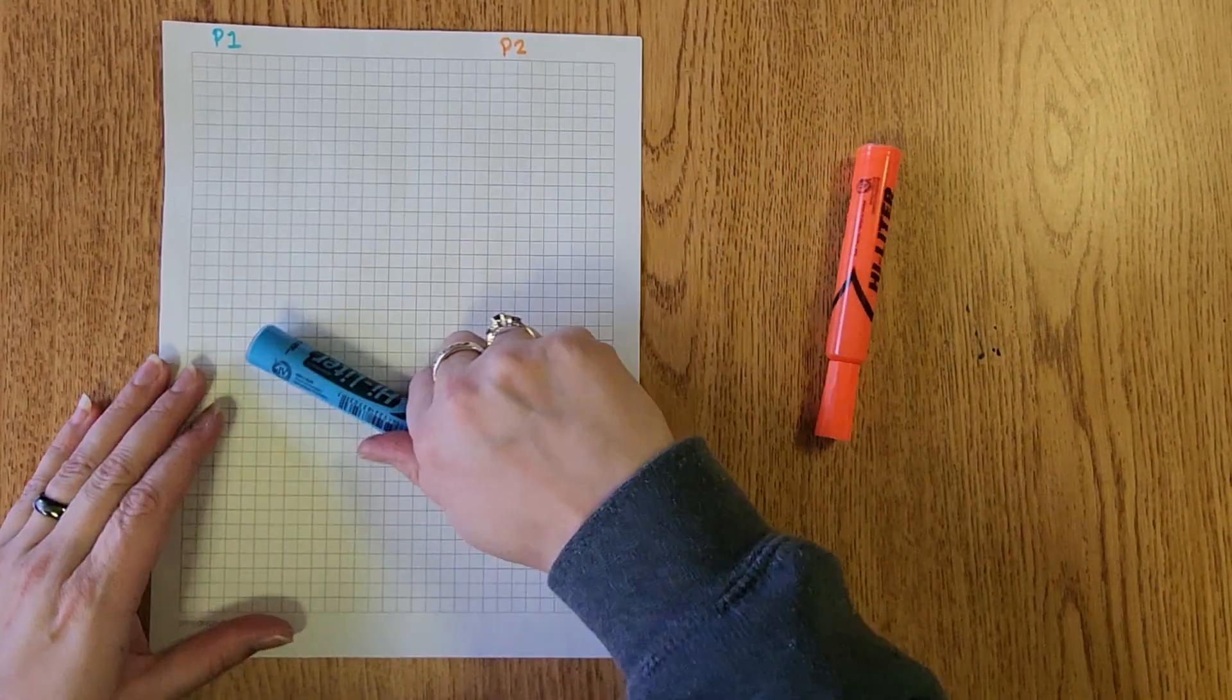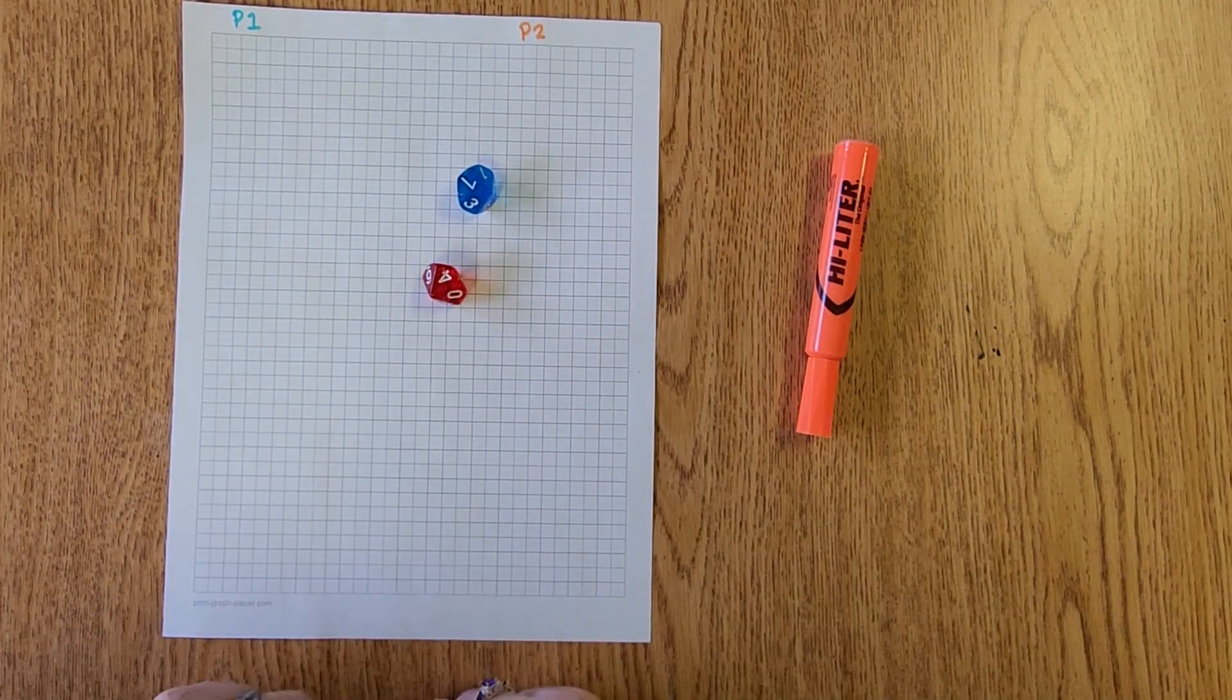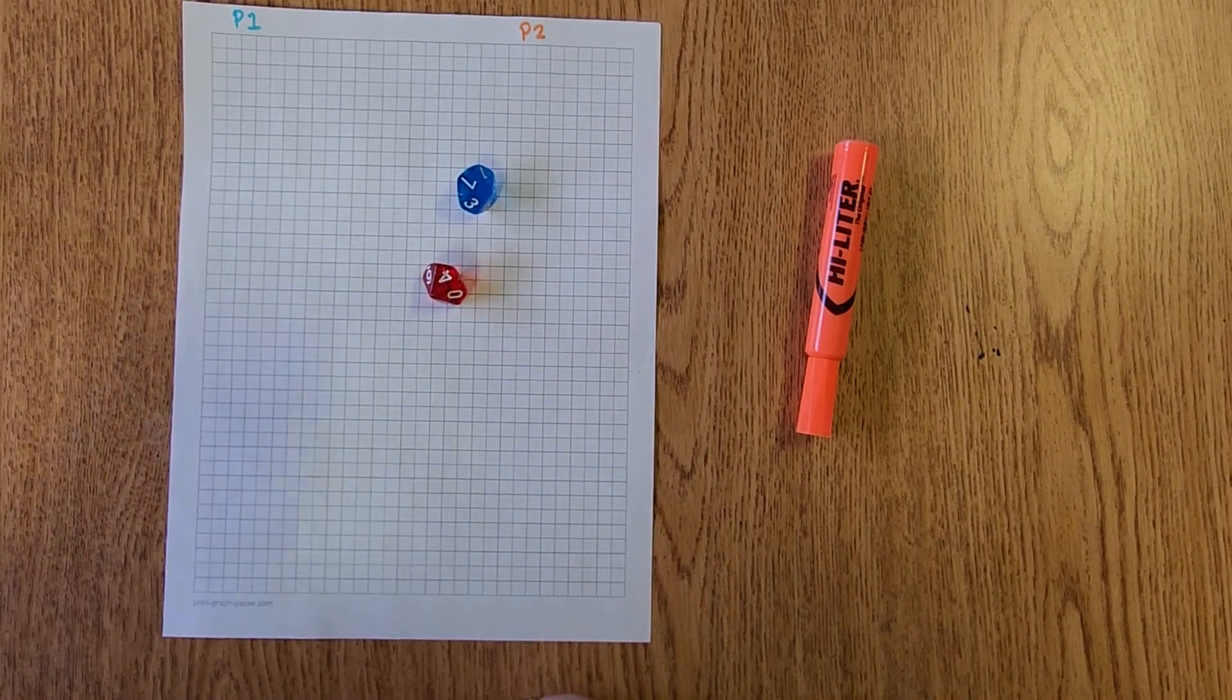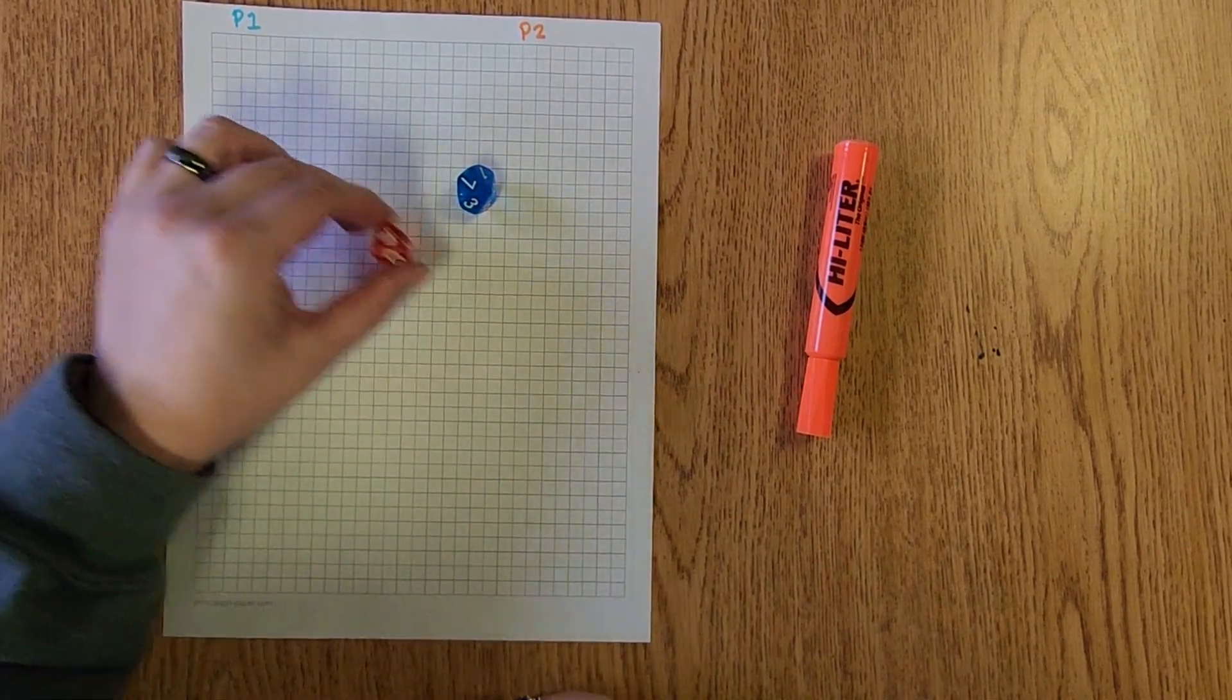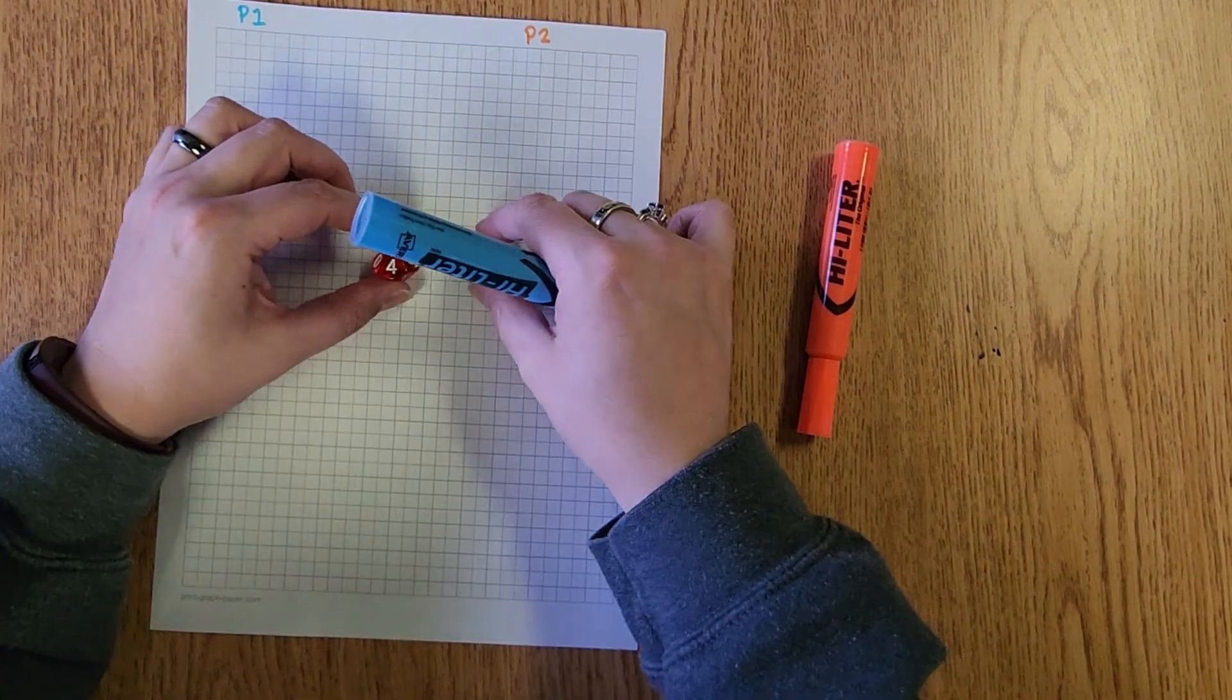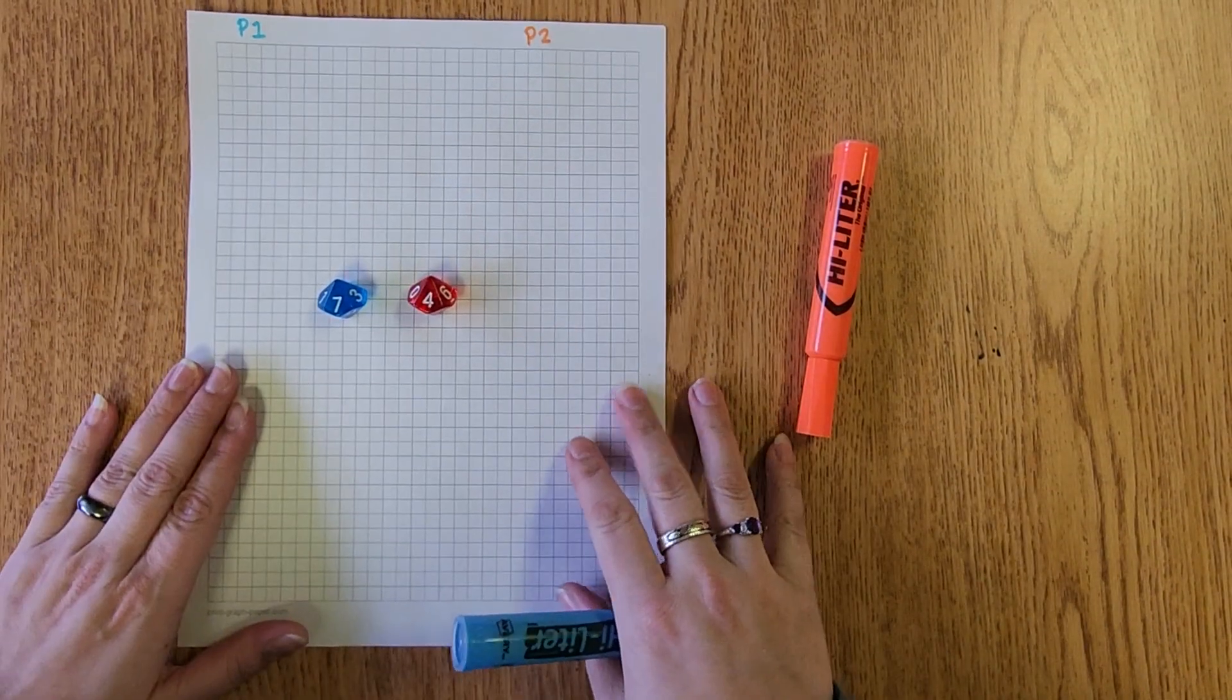So player one's turn. They would take their two dice and roll the dice. In this case our ten-sided dice does not indicate the number ten and we are practicing our facts from one to ten. So we are going to use the zero as a ten. This says four times seven. I could rearrange these to make them seven times four depending on how I would like to draw my array.